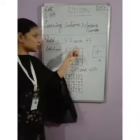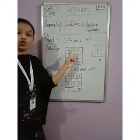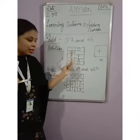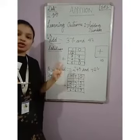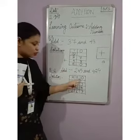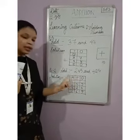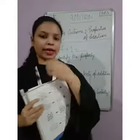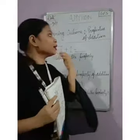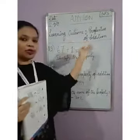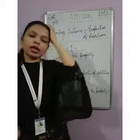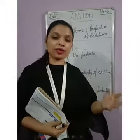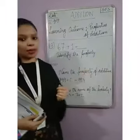Remember, in a 2-digit number there are 2 place values: 1s and 10s. And in a 3-digit number there are 3 place values: 1s, 10s, and 100s. This next question is taken from the properties of addition, where you have to identify which property is used in the sum.